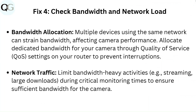Fix 4: Check bandwidth and network load. Bandwidth allocation — multiple devices using the same network can strain bandwidth, affecting camera performance. Allocate dedicated bandwidth for your camera through Quality of Service (QoS) settings on your router to prevent interruptions.